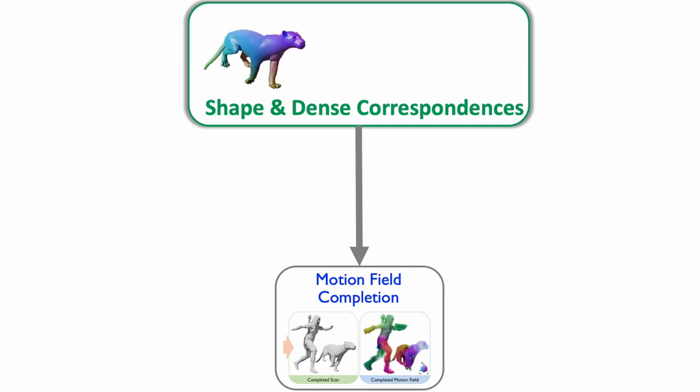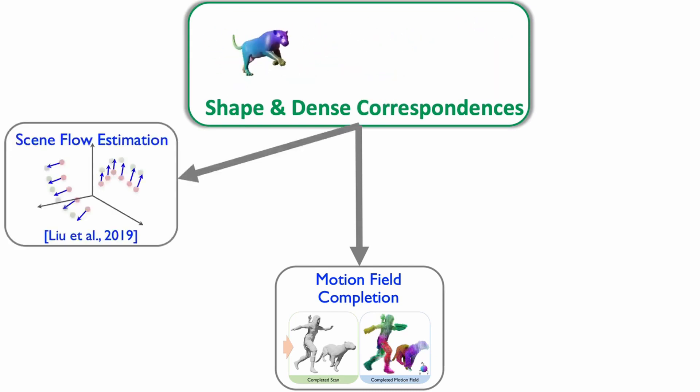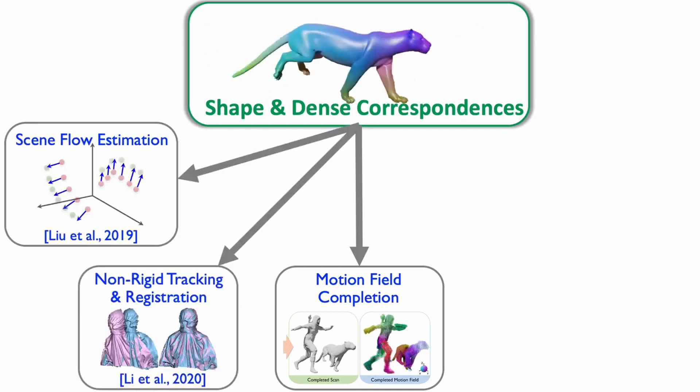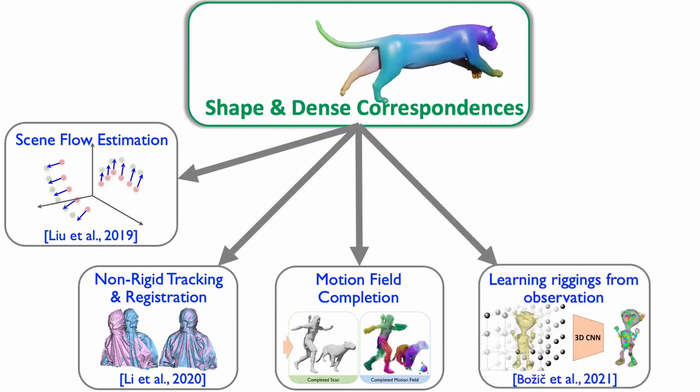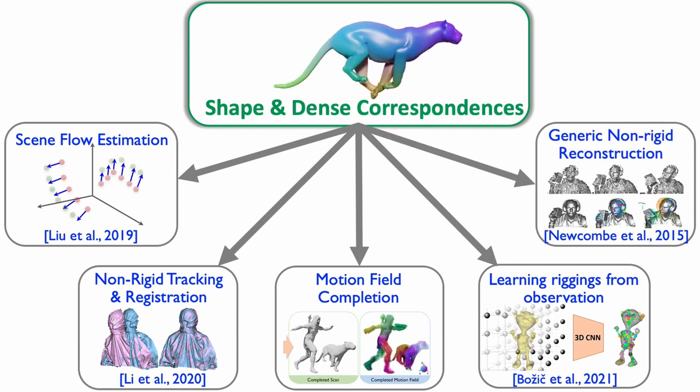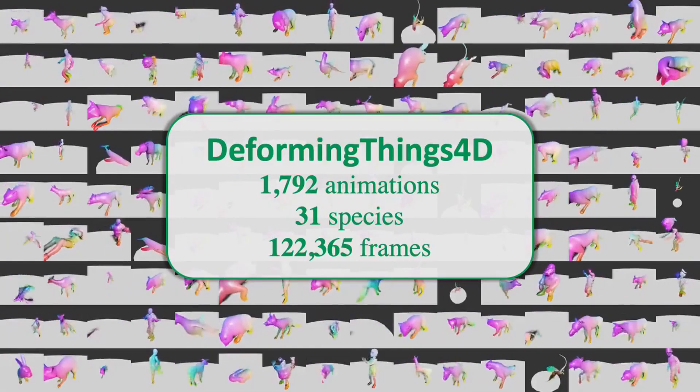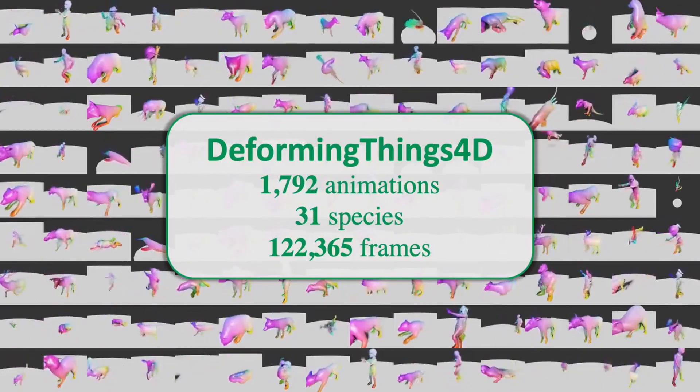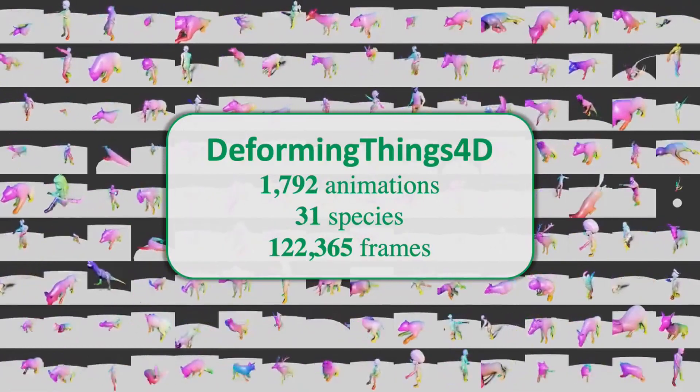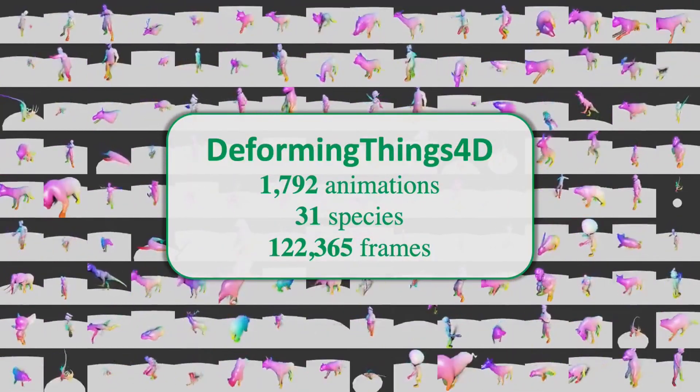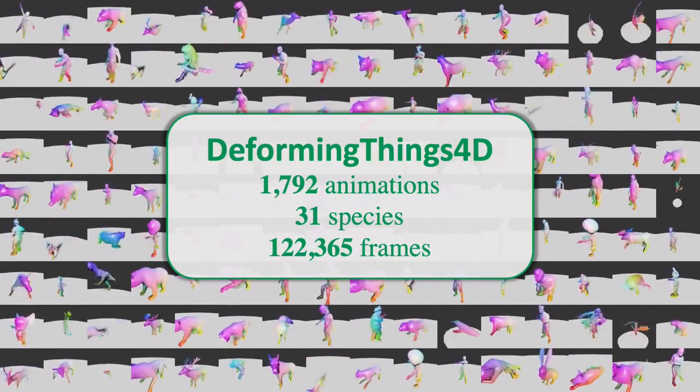The dataset is also tailored to tackle many other tasks using data-driven approaches, including scene flow estimation, non-rigid registration, learning rigging from observations, and generic non-rigid reconstruction. In total, Deforming Things 4D contains 1,972 animations spanning 31 species with 122,365 frames.